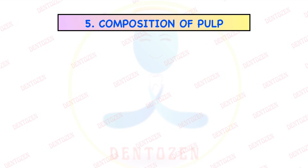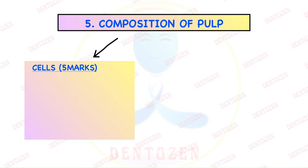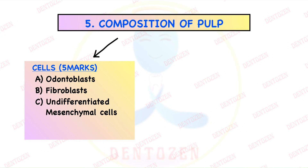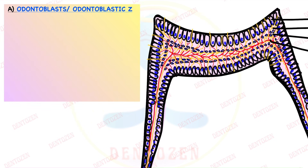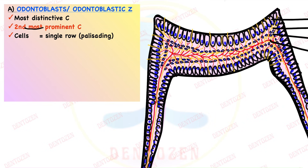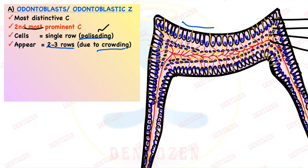Now let's see the composition of pulp. It is made up of cells — which itself can be a 5-marks question — including odontoblasts, fibroblasts, undifferentiated mesenchymal cells, defense cells, and pulpal stem cells. Apart from that, we have extracellular matrix made up of fibers and ground substance. Odontoblast cells are the most distinctive cells and the second most numerous cells. They are arranged in a single row, called palisading, though they can appear in two to three rows due to crowding — called pseudostratified appearance.